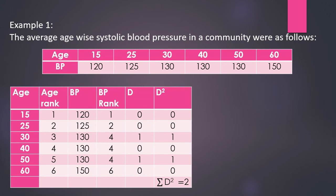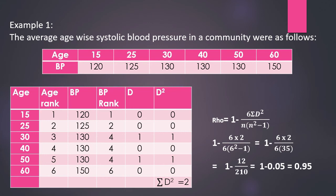We then find d, the difference between ranks for each pair: 0, 0, 1, 0, 1, 0. Squaring these gives d squared values of 0, 0, 1, 0, 1, 0, so sigma d squared equals 2. Applying to the formula — rho equals 1 minus 6 times sigma d squared divided by n(n squared minus 1) — gives 1 minus 12 divided by 210, which is 1 minus 0.05, yielding rho equals 0.95. This shows a near-perfect positive correlation: as age increases, BP also increases.